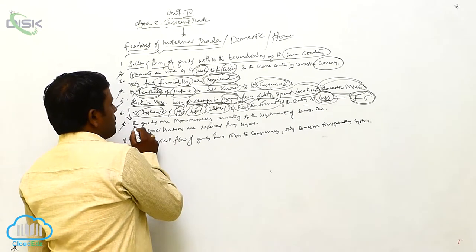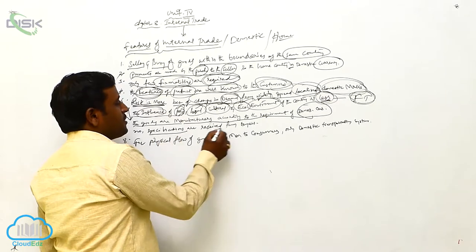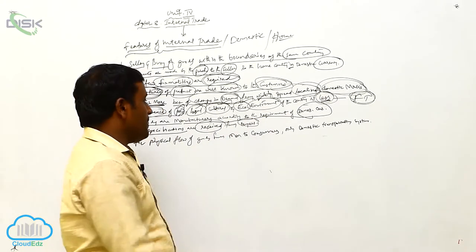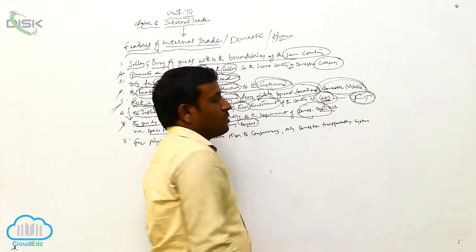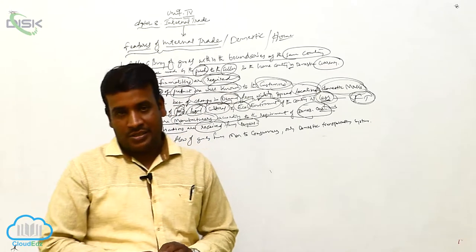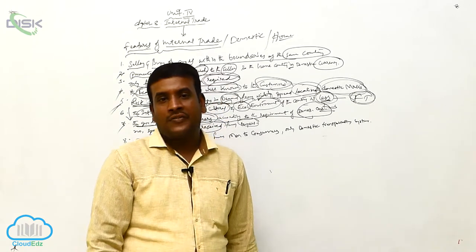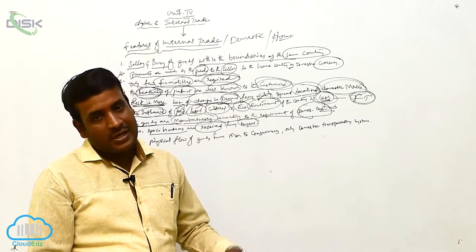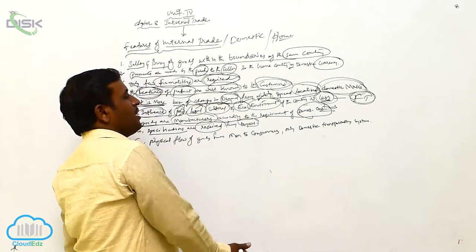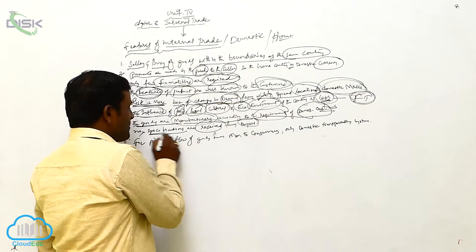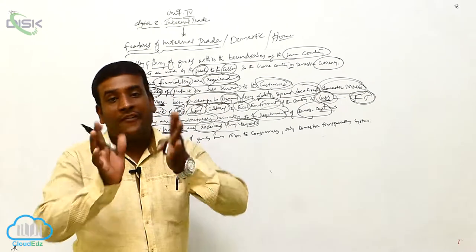The goods are manufactured according to the requirements of domestic customers. They may not receive specifications from the buyers. In our domestic market the manufacturer, retailer, or wholesaler clearly knows the customers directly — who the customer is, which type of product they want, what features they want. So they manufacture accordingly. There is no need to formally receive a specification of product requirements from the buyer, as there are direct relations with customers.